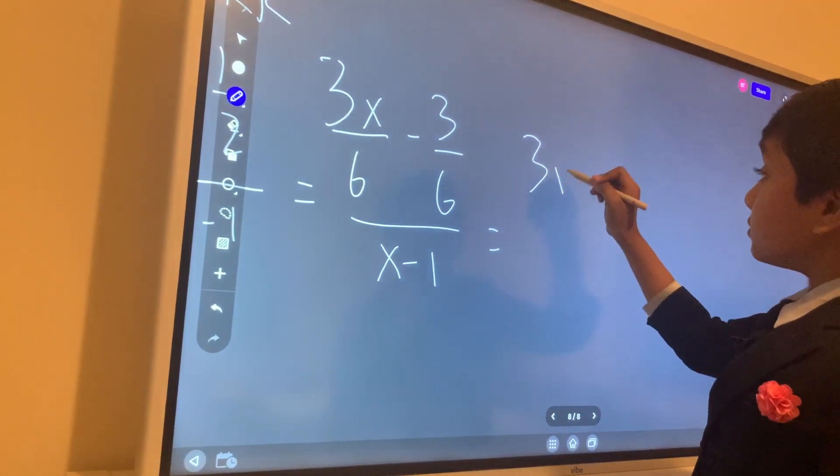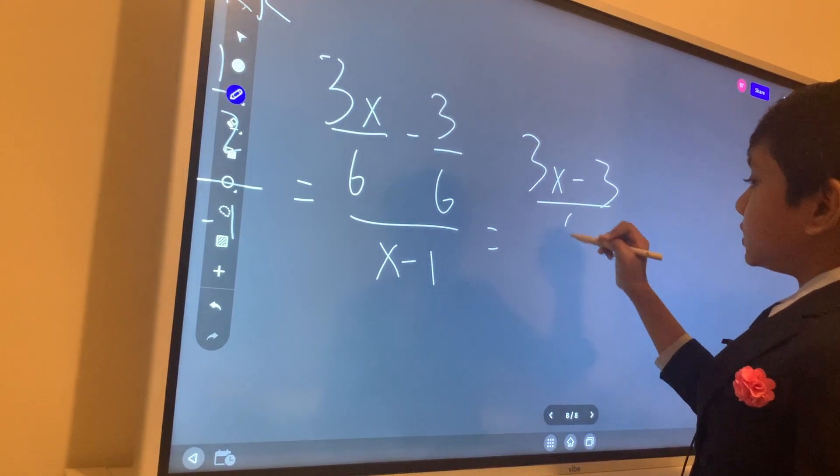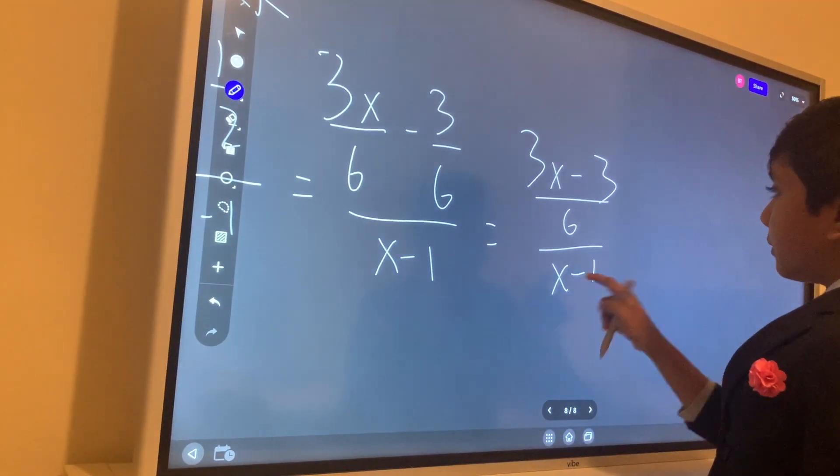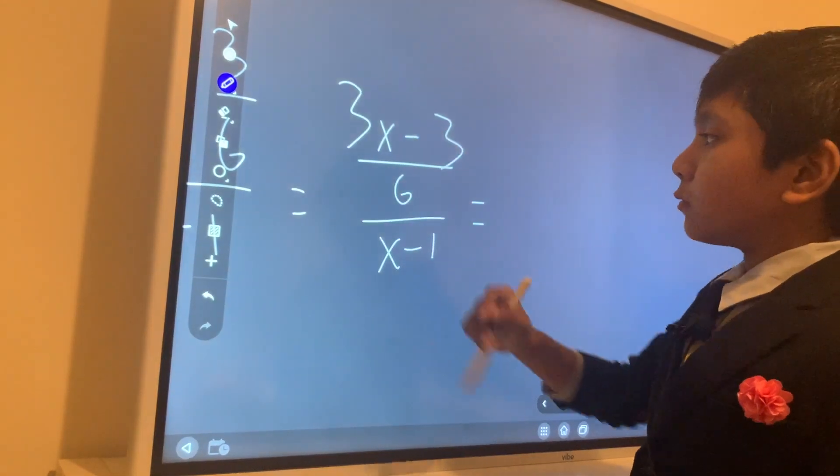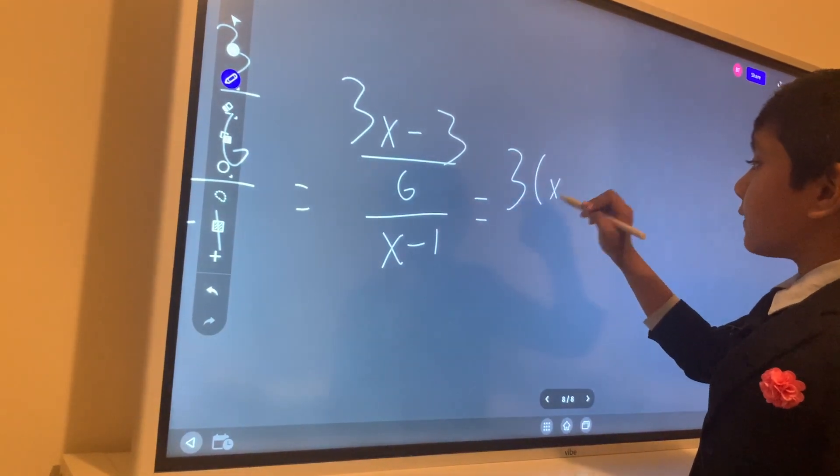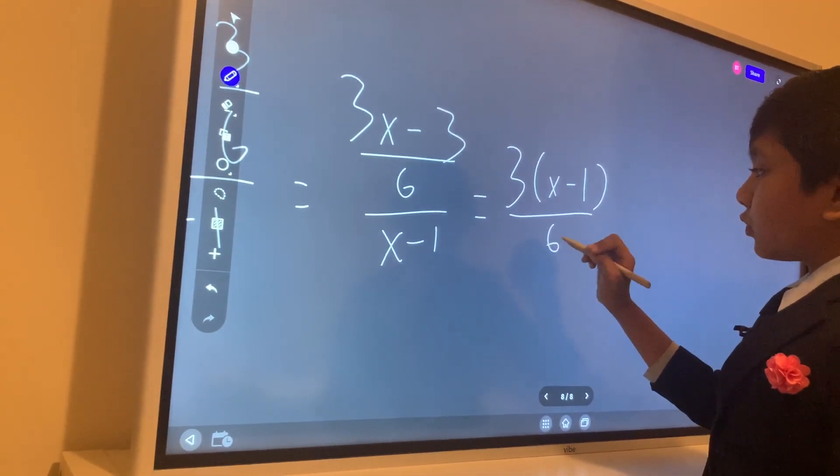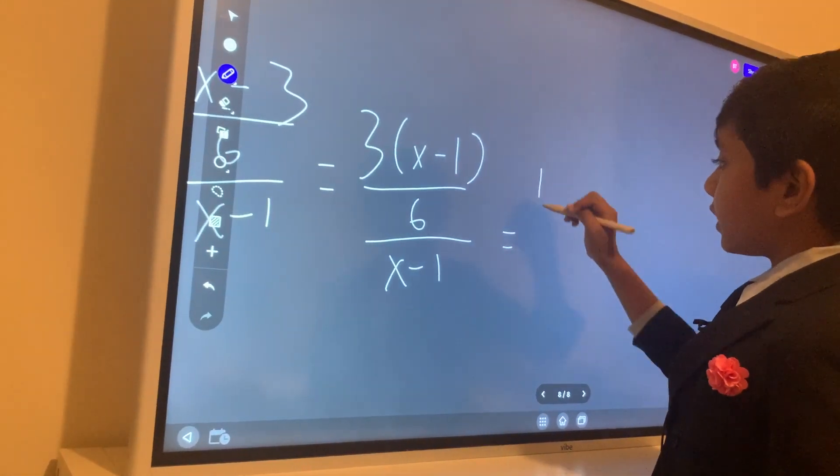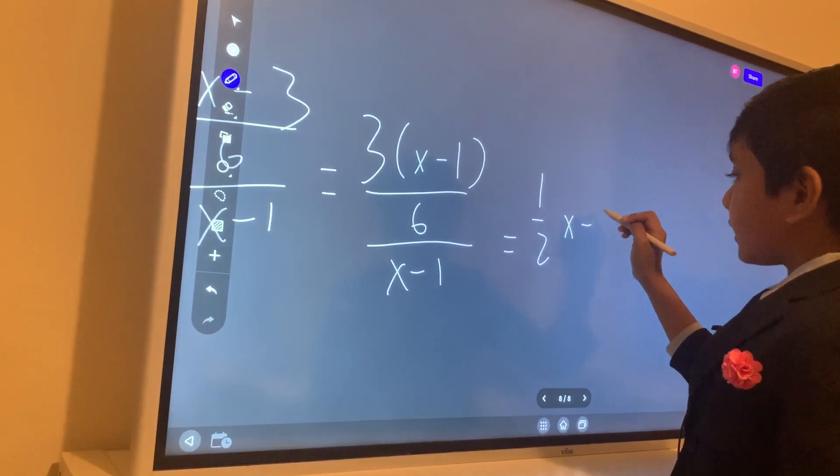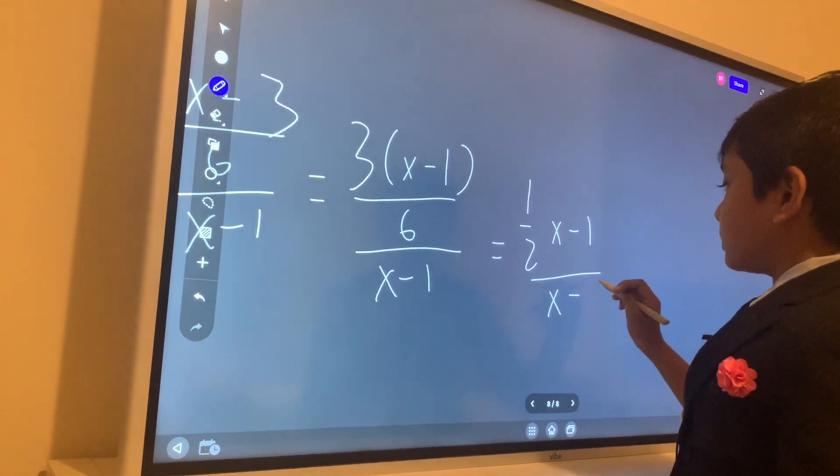Giving us 3x minus 3 over 6 over x minus 1, giving us 1/2 times (x minus 1) over (x minus 1).